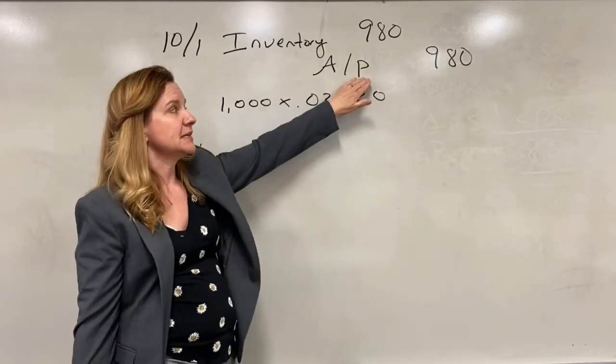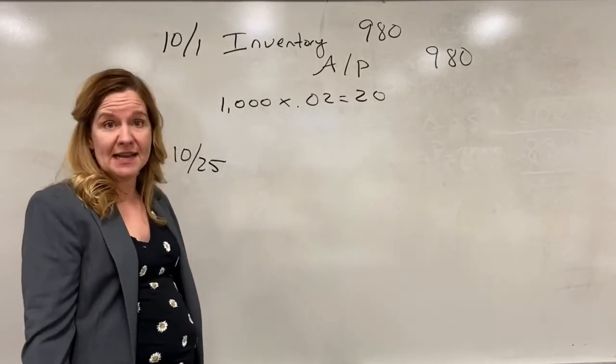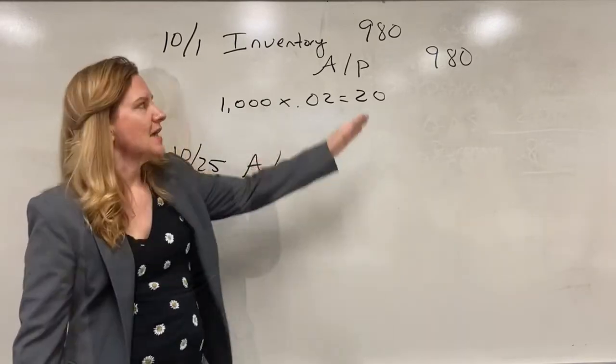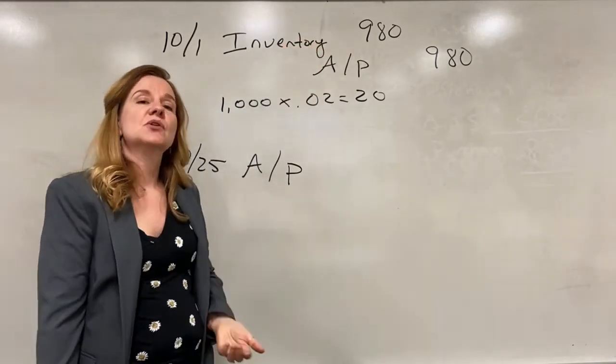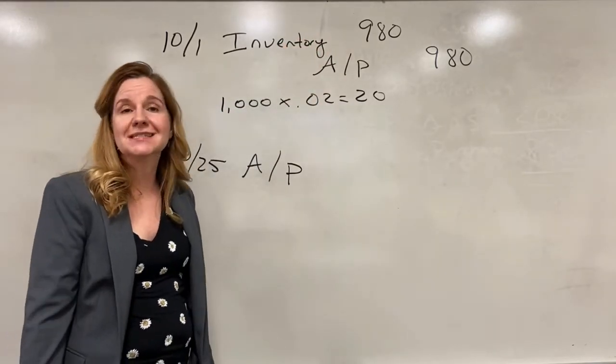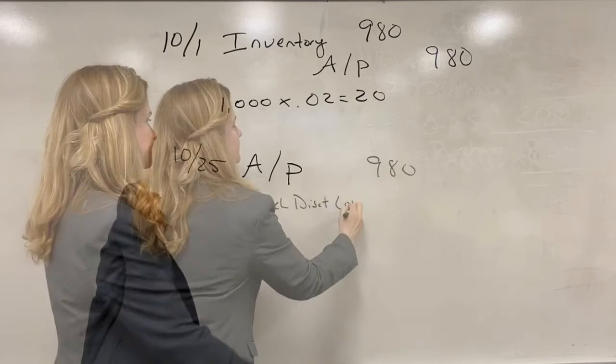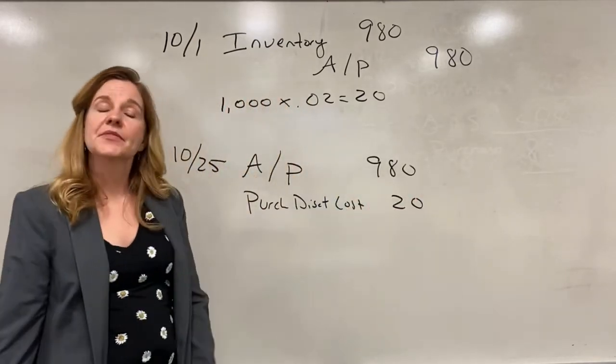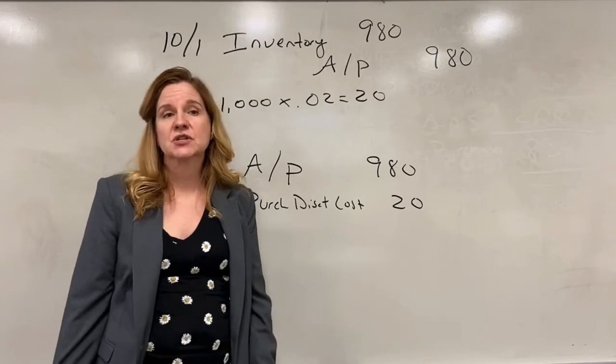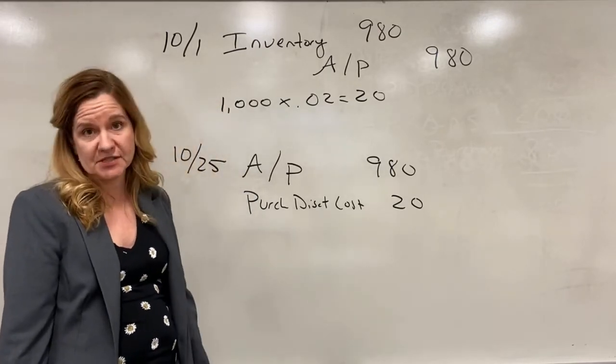But I'm going to reduce accounts payable by the 980, the amount that's in it. That $20 discount that we recorded immediately here needs to go to an account called purchase discount lost of $20. And then the amount that we're actually paying is cash which will be a credit to cash for the full $1,000.